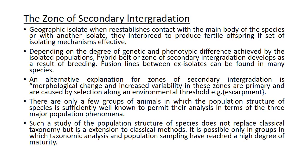The zone of secondary intergradation is where intergradation of characters occurs when two geographic isolates breed to produce fertile offspring. This intergradation depends on the difference in characters the two isolates had achieved during their isolating period. The methods of population analysis do not reject previously adopted methods but are essentially an extension of the classical method for taxonomic analysis and population sampling.